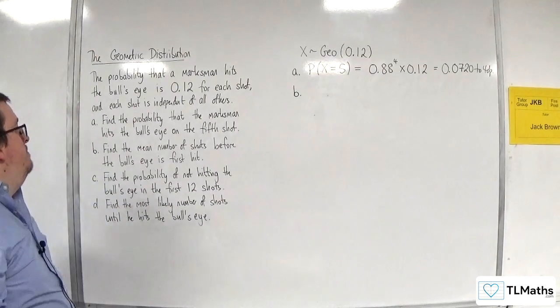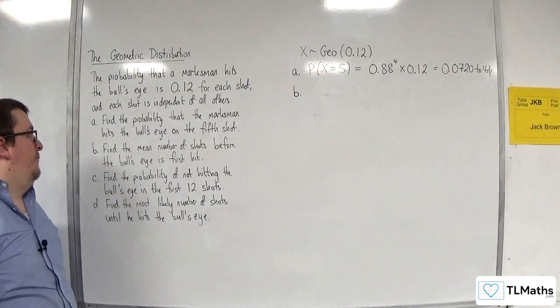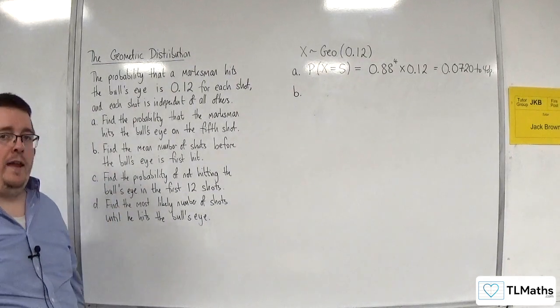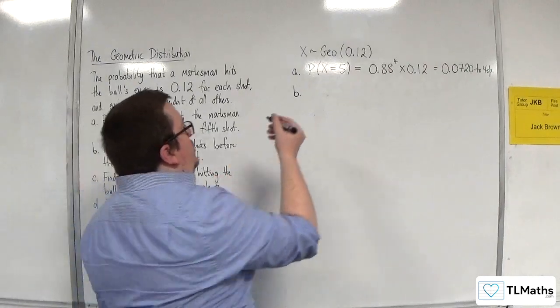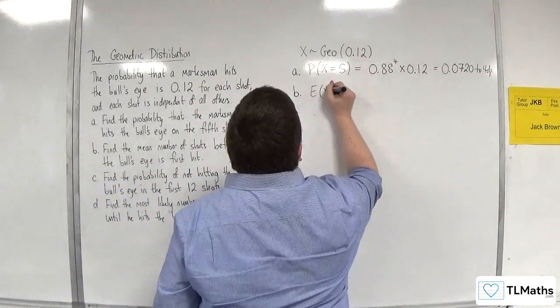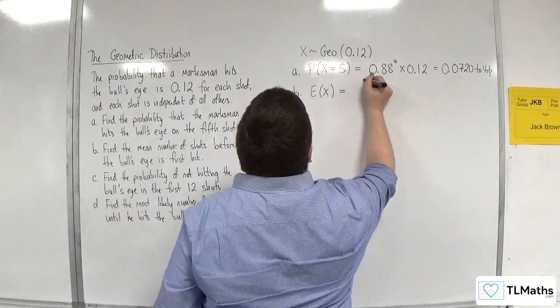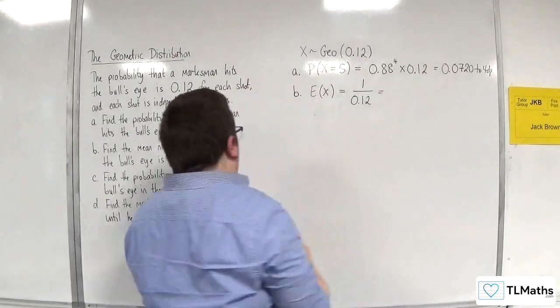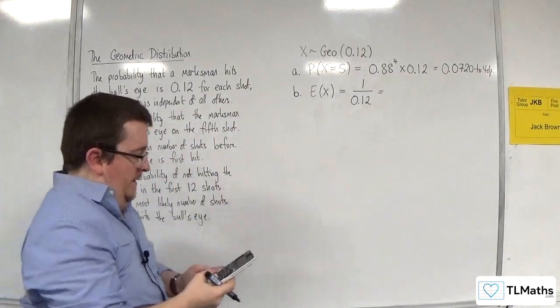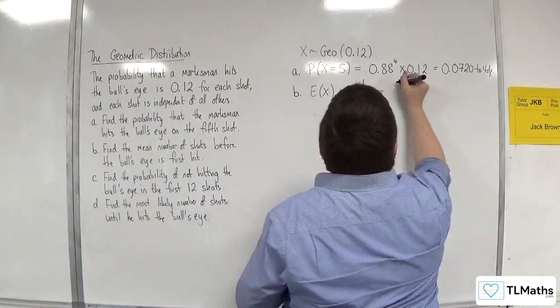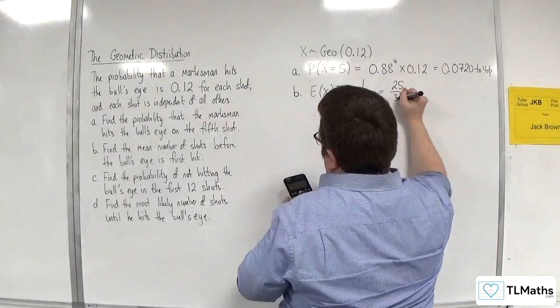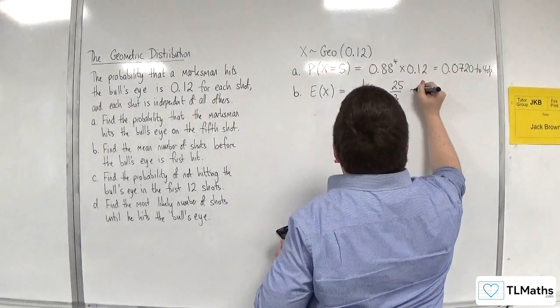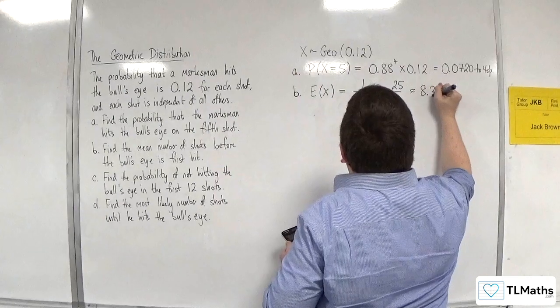Part B: find the mean number of shots before the bullseye is first hit. So, essentially, this is asking for E of X, which is equal to 1 over P. So, 1 divided by 0.12. And that gets us 25 over 3, which is approximately 8.33.